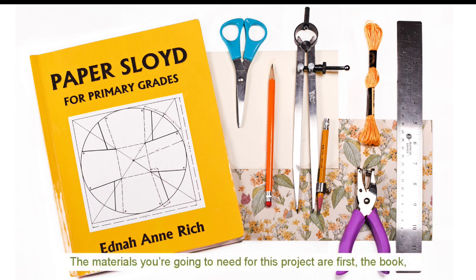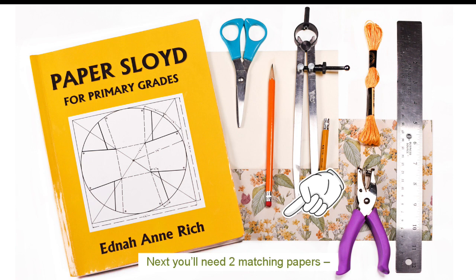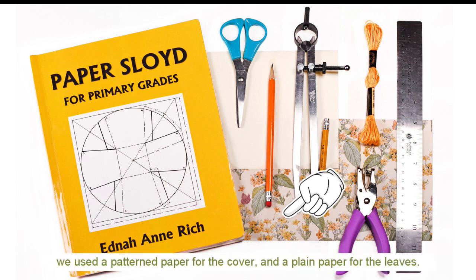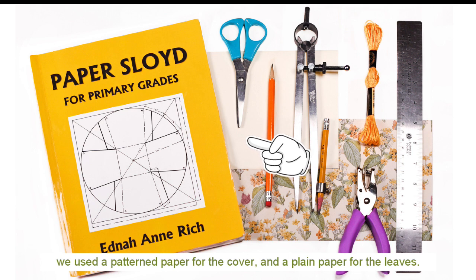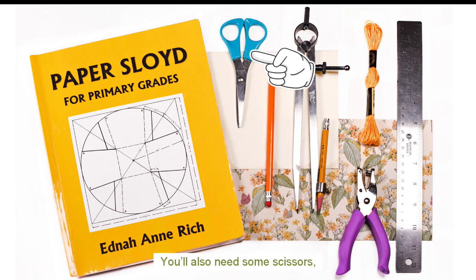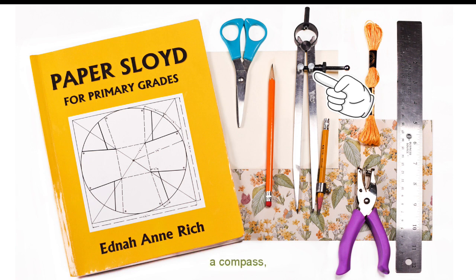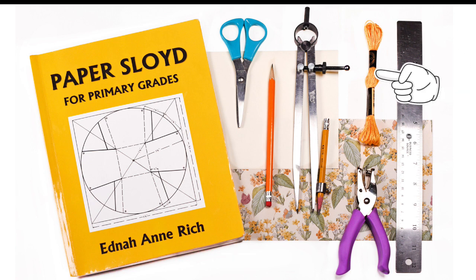The materials you're going to need for this project are first, the book, Paper Sloid for Primary Grades. You'll find a link to this below, one for the physical book, and one for the free digital version. Next, you'll need two matching papers. We used a pattern paper for the cover and a plain paper for the leaves. Both were from scrap paper. You'll also need some scissors, a pencil, a compass, a hole punch, a ruler, and something to tie it with. We used some embroidery thread.